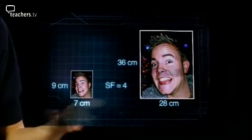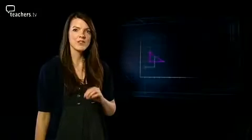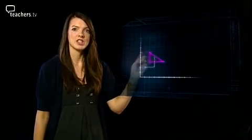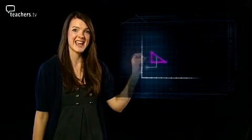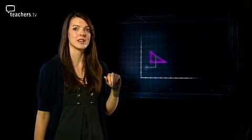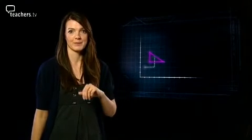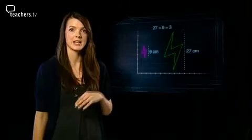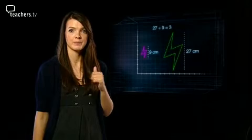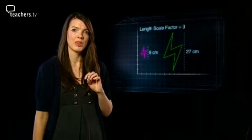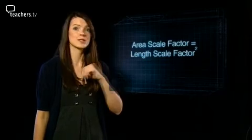Enlargement means making something bigger or smaller by a scale factor. The scale factor is the number you multiply the original dimensions by to get the new dimensions. If you're enlarging from a centre of enlargement, work out the distance from the centre to each point and multiply by the scale factor. You can use the counting squares method to help. You can find a scale factor by dividing the new size by the original size. The area scale factor equals the length scale factor squared, and you can extend this idea to volume — which should help Dave solve his cake problem.